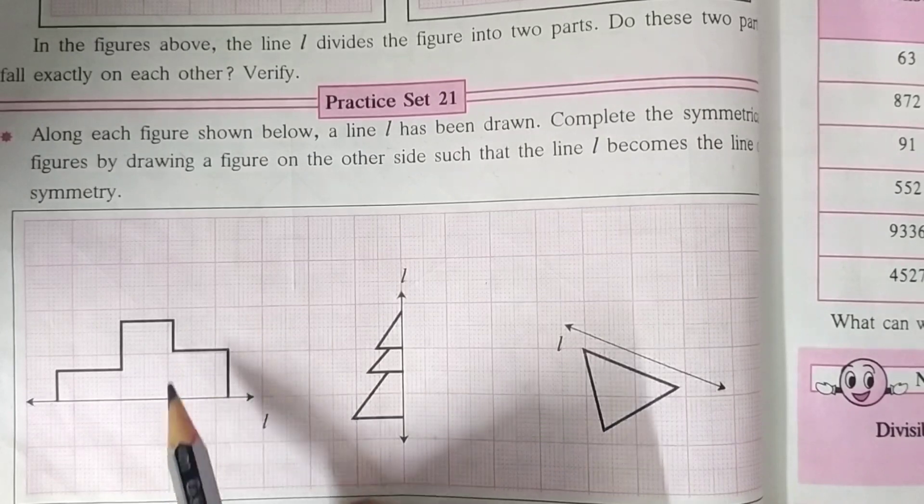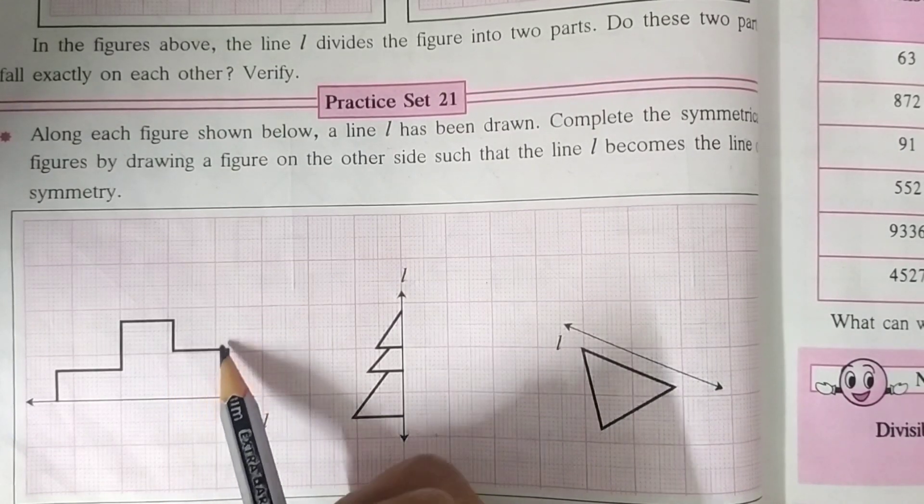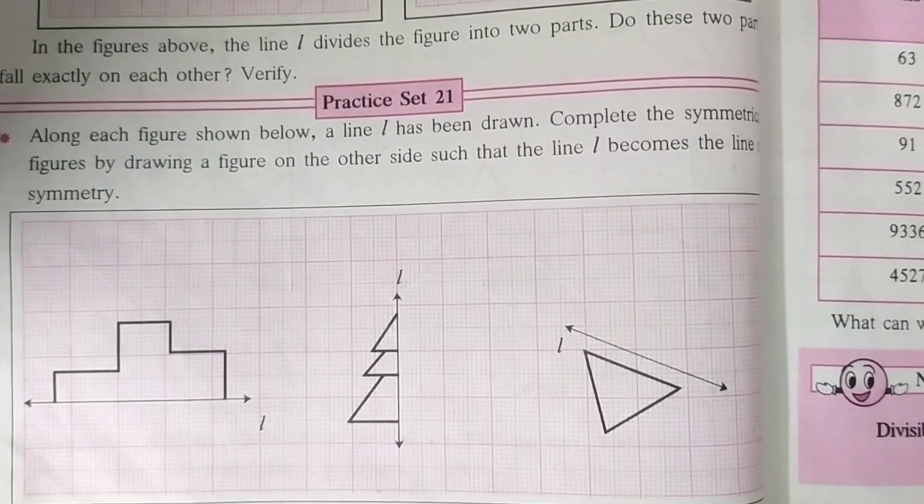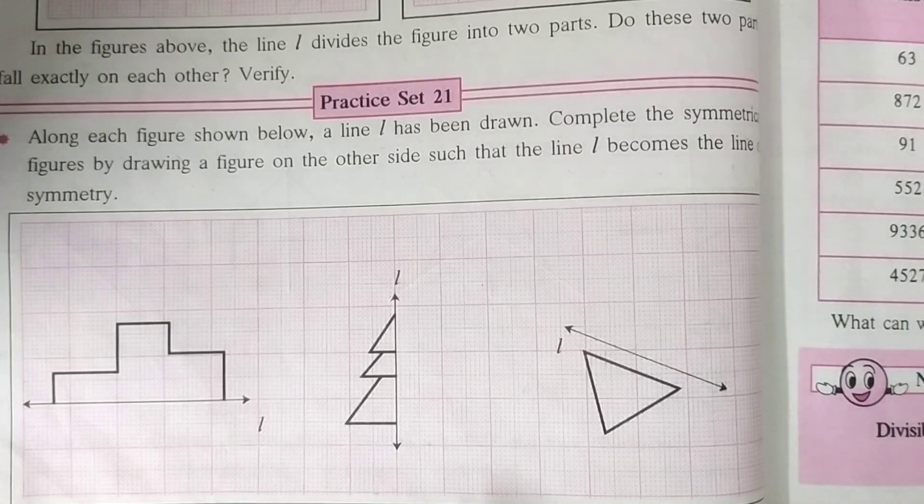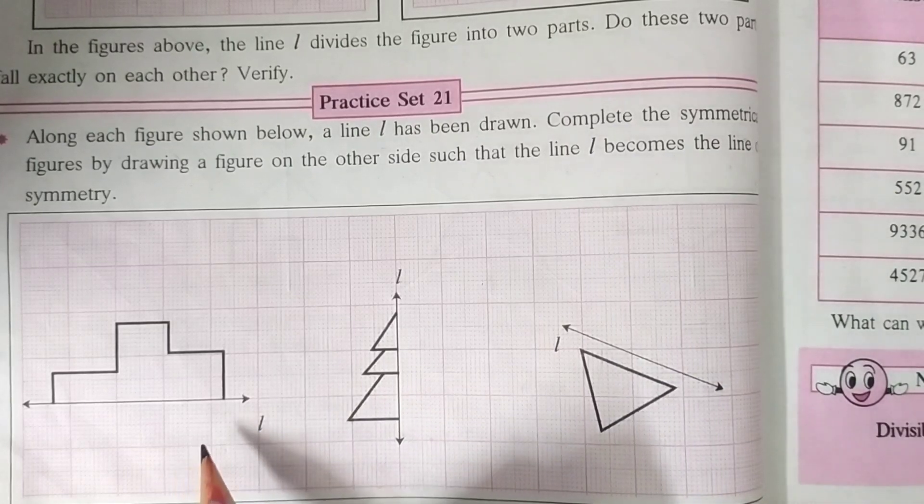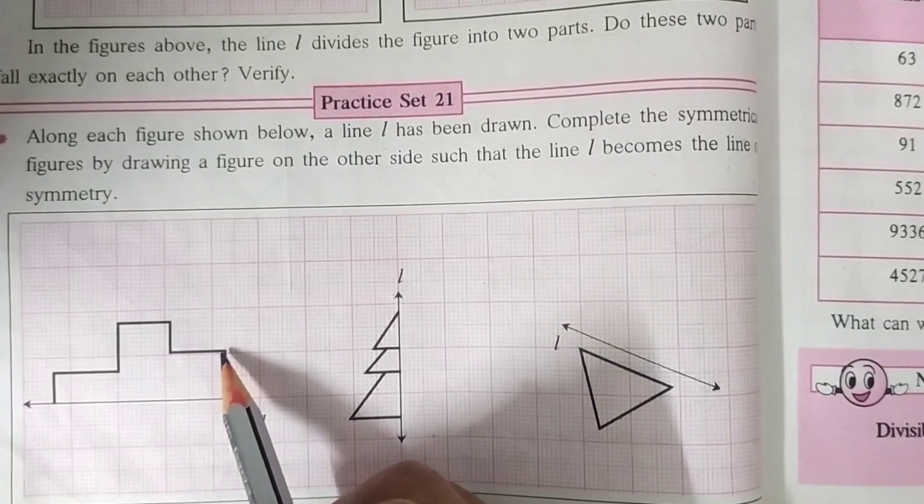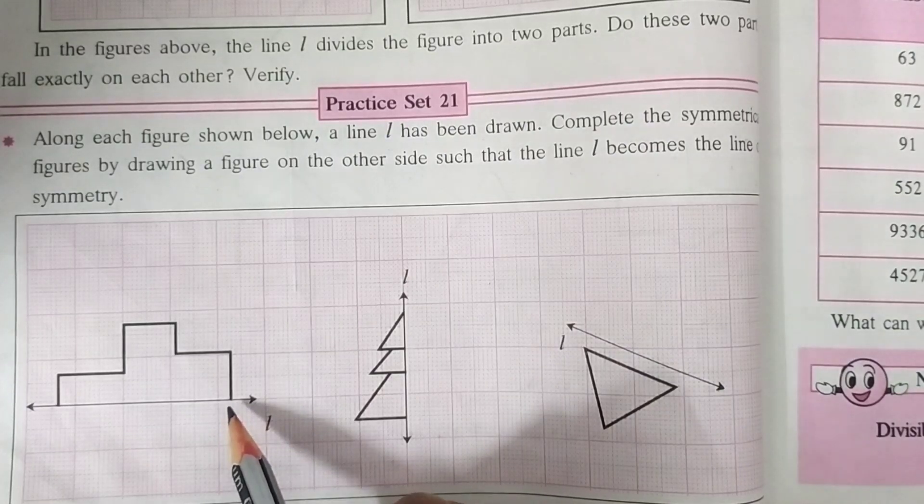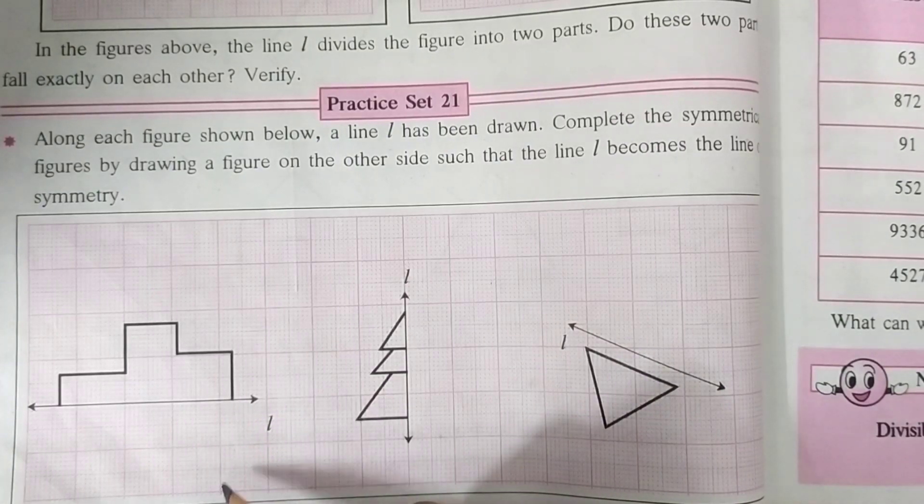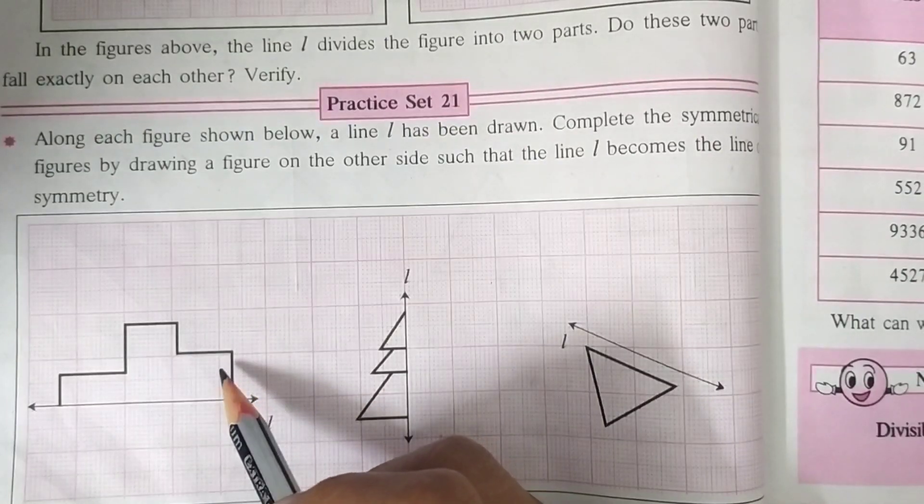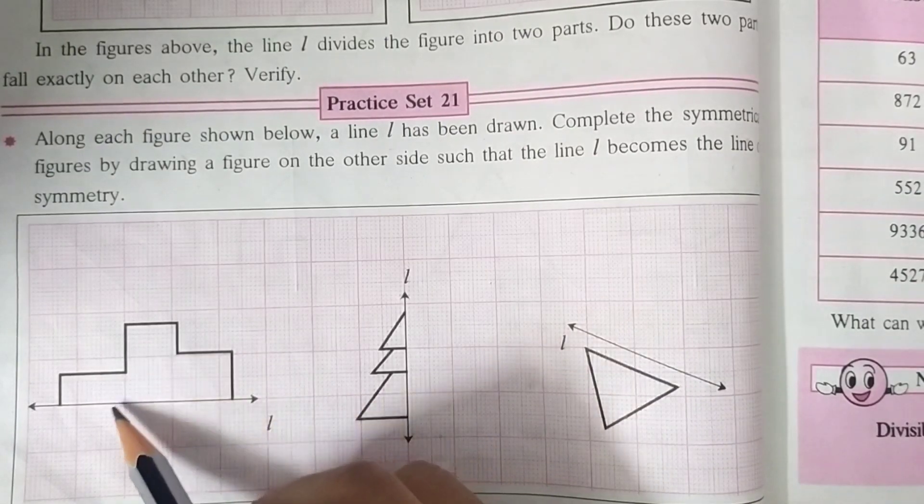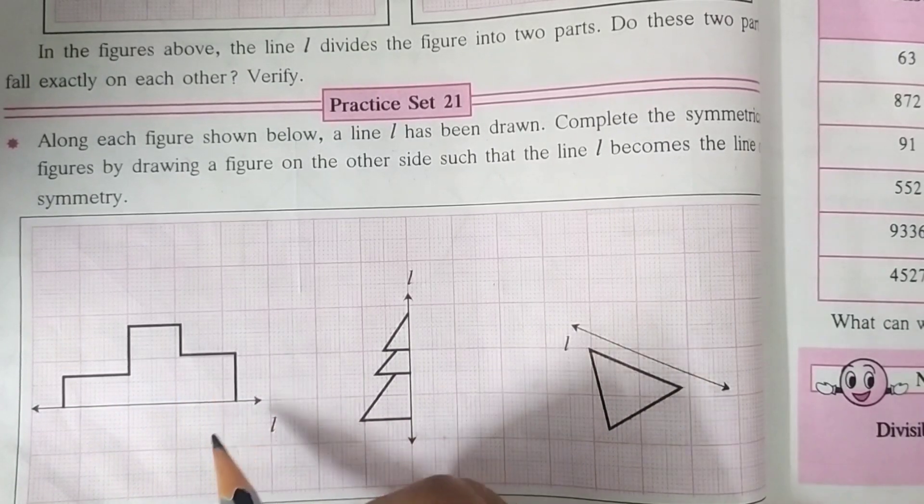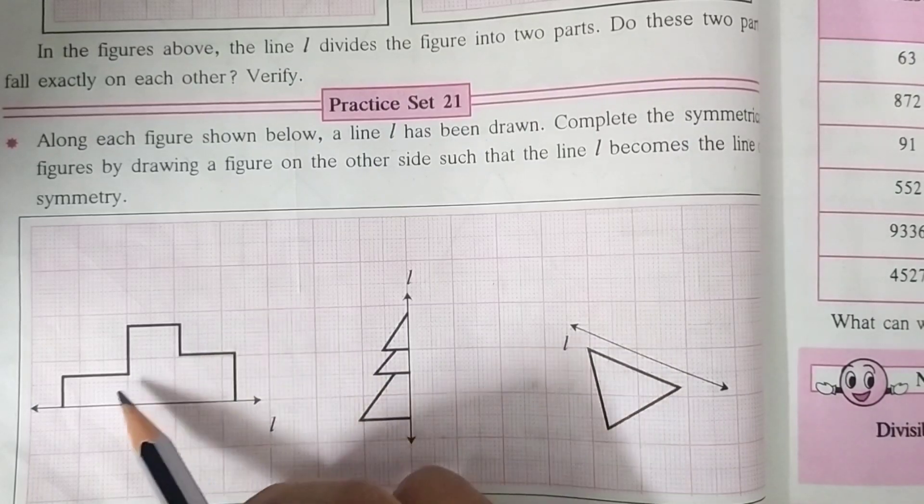Now we have to draw this figure as it is on the downside of line L. So for it, first of all, we have to observe the given figure, the distance left in the figures and just leave places on other side of figure as given in the figure. Look, means this type of blank spaces. These blank spaces, we have to leave same places on other side to draw this figure.